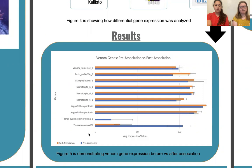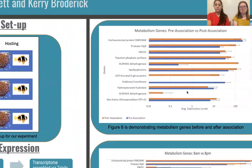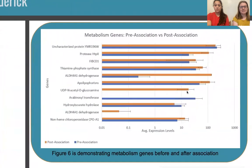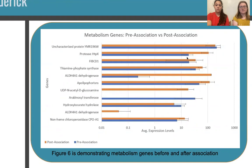We found 10 venom genes, plotted with genes on the y-axis and average expression values on the x-axis — orange representing the hosting group and blue the control group. As you can see, 7 out of 10 venom genes were more upregulated in the hosting group than the control group. We also found 11 metabolism genes. Some of those genes were only expressed in the hosting group, and one was expressed in the control group. Eight out of 11 metabolism genes were upregulated by the hosting anemone compared to the control.